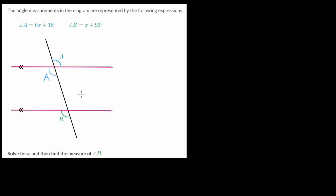Likewise, you can see it a different way. If we look at the vertical angle to B, those are equal angles since they're vertical. You can see this angle and angle A and B are corresponding as well. Or you can see that we have alternate interior angles between A and B, and we know those are equal. So there are lots of different ways to see that A and B are equal.